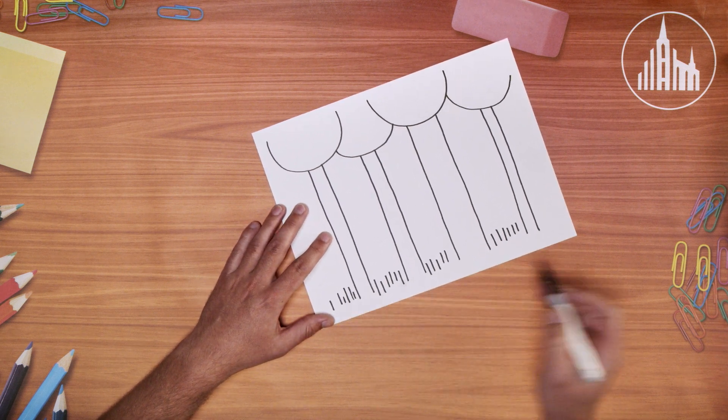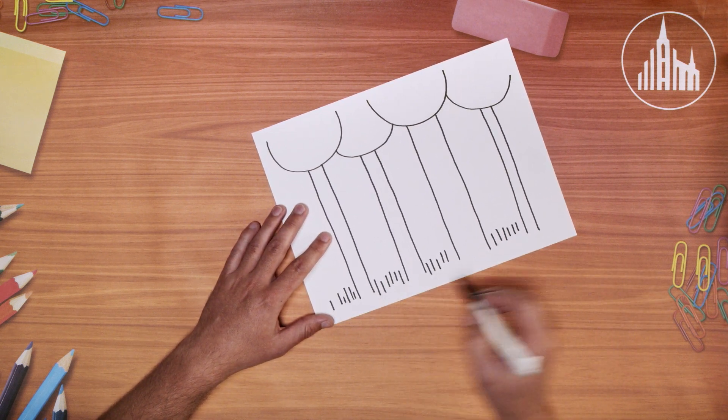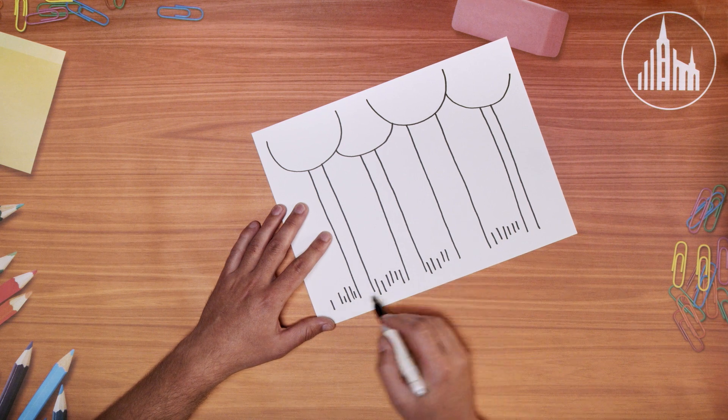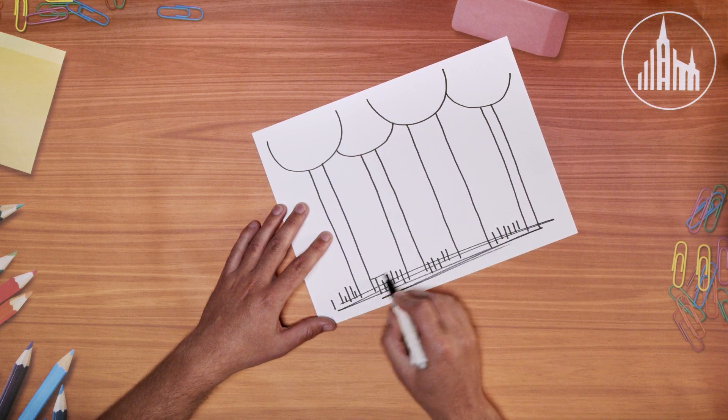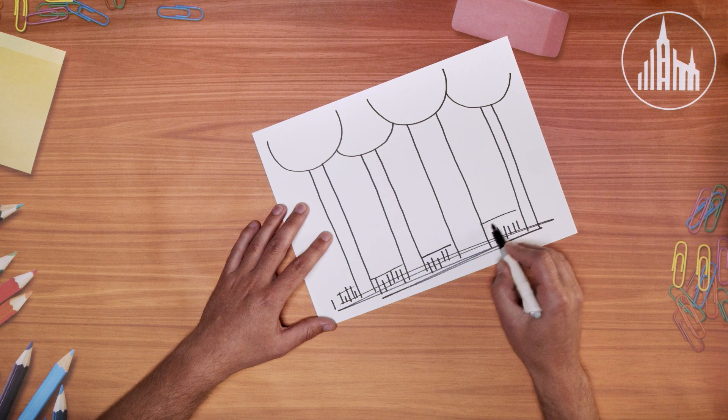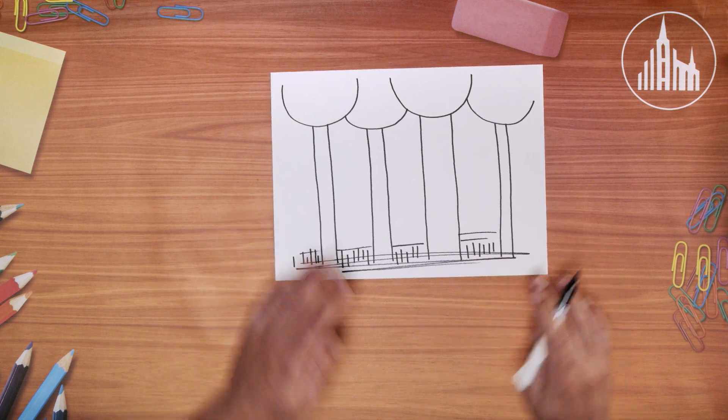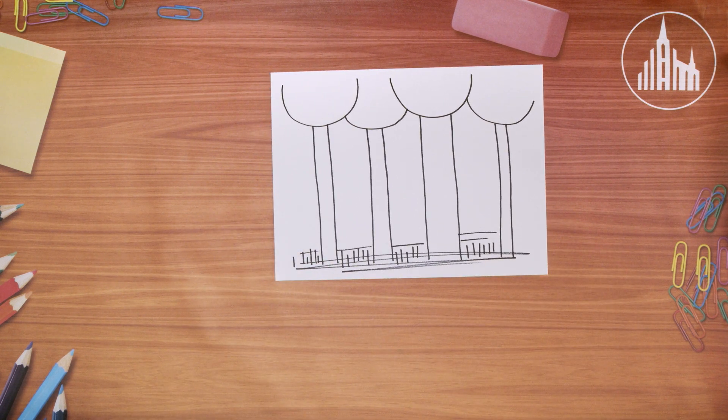And now after we get that done, I think it's fun to just add some little lines. And this is kind of fun because you can just go across the page really fast and create some shadows on here. Maybe put a couple between the trees like that.